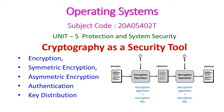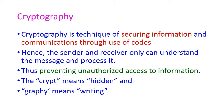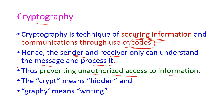In this operating system class we will see cryptography as a security tool. Under this topic we will see encryption and the two types of encryption — symmetric and asymmetric encryption. After that we will see authentication and key distribution. Cryptography is a technique of securing information and communication through the use of codes, so that only the sender and receiver can understand the message, thus preventing unauthorized access to the information.